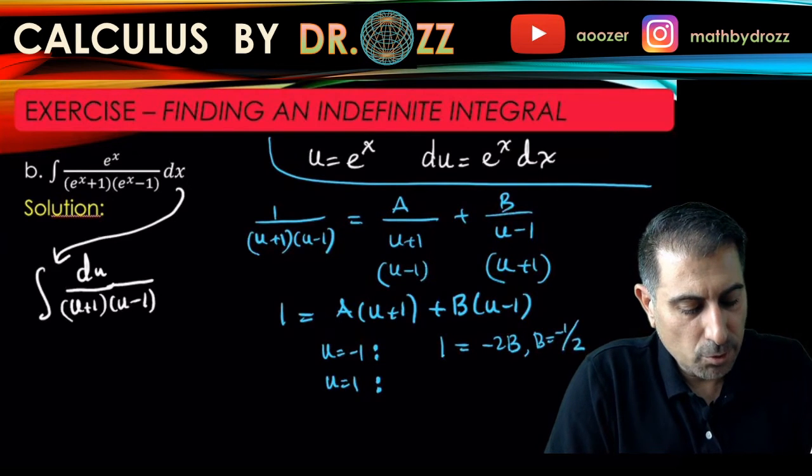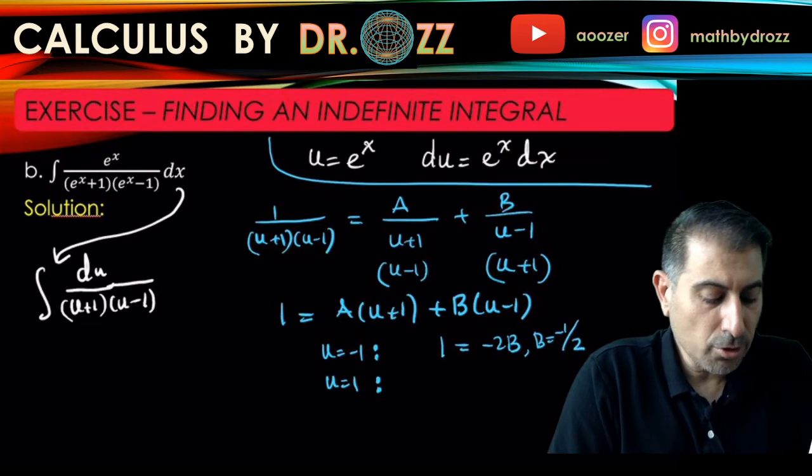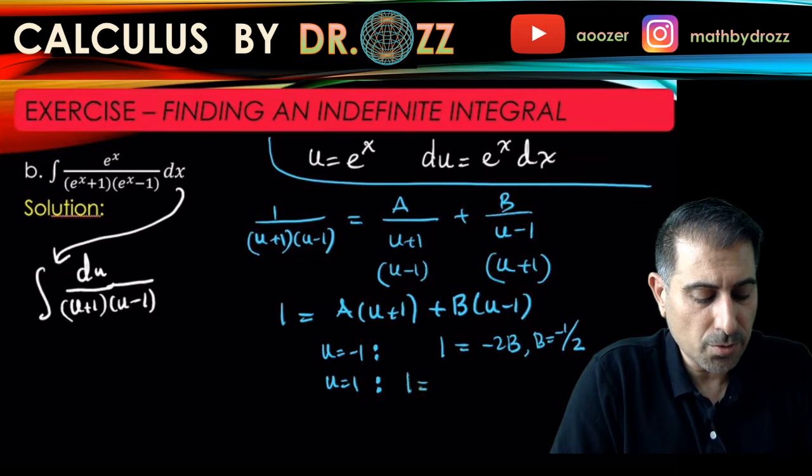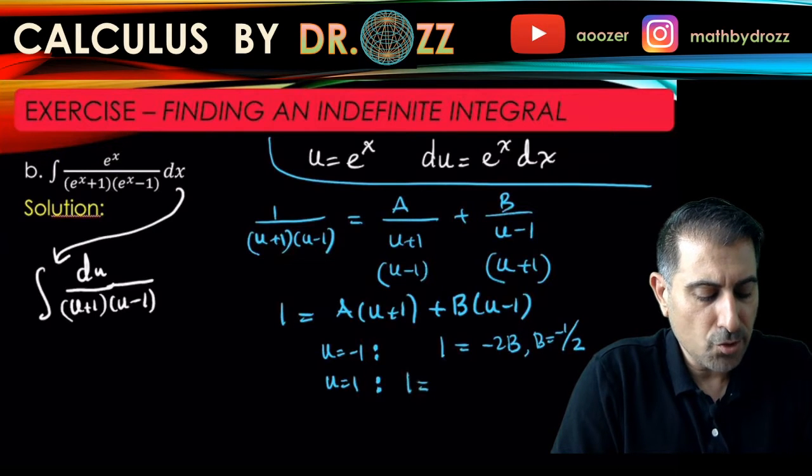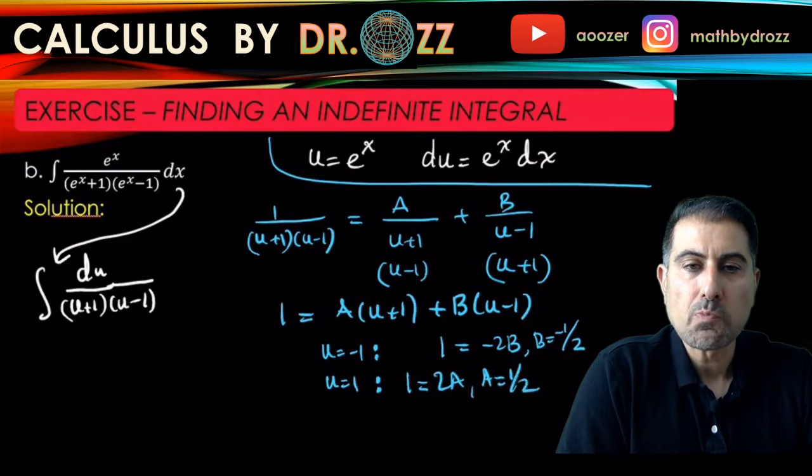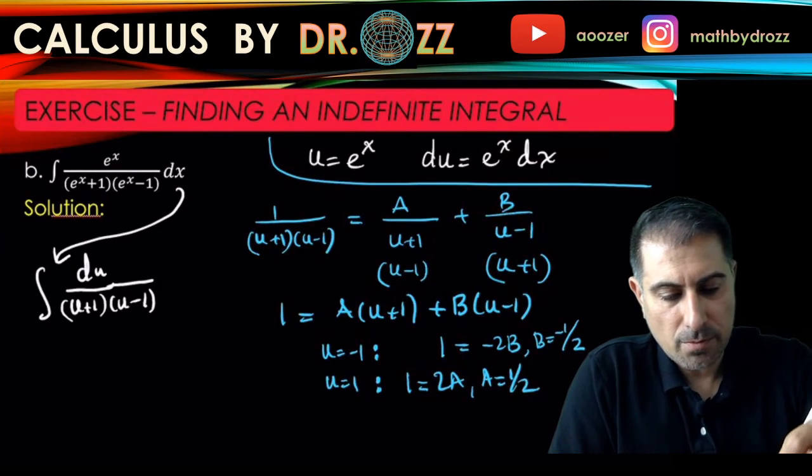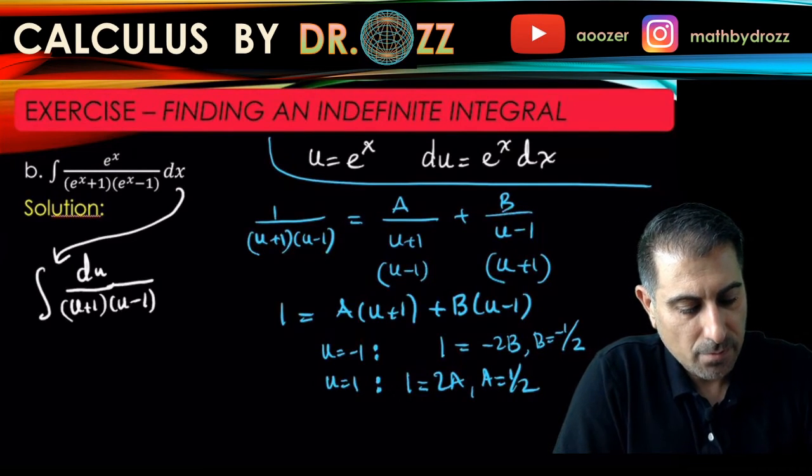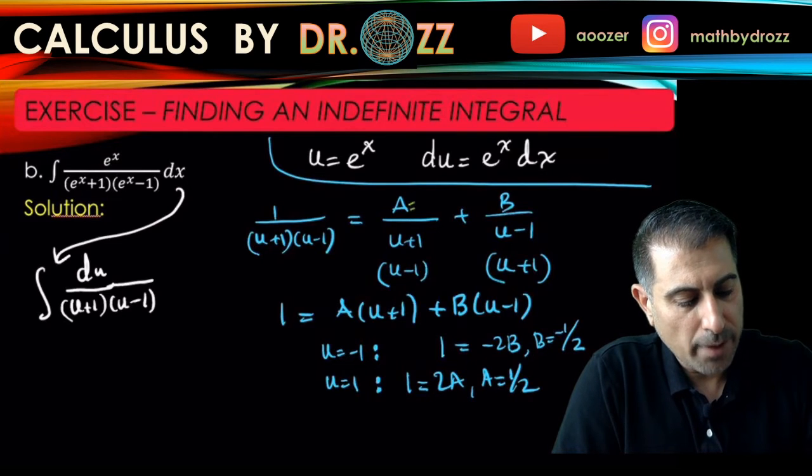If u equals 1, the second term on the right-hand side is gone. 1 equals 2A, and we get A to be 1/2. So then this is 1/2 and this is negative 1/2.